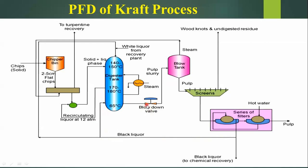The blow-down valve reduces the pressure of the stream from 80 atmospheres to 1 atmosphere before entering the blow tank. Inside the blow tank, when hot pulp slurry passes through, heat is recovered in the form of steam. This recovered steam is sent back to preheat the chips coming from the chipper bin. The blow tank has a high concentration of pulp and low concentration of water. The concentrated pulp is then sent to the screens, where it is cleaned to remove wood knots and undigested residues, which are removed as waste.